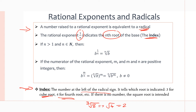If we want a fourth root, we put a 4 on the left side of the radical sign. The fourth root of 16 equals 2, so we put that 4 there as our index. Going back to rational exponents, that index is going to be the denominator of a rational exponent.